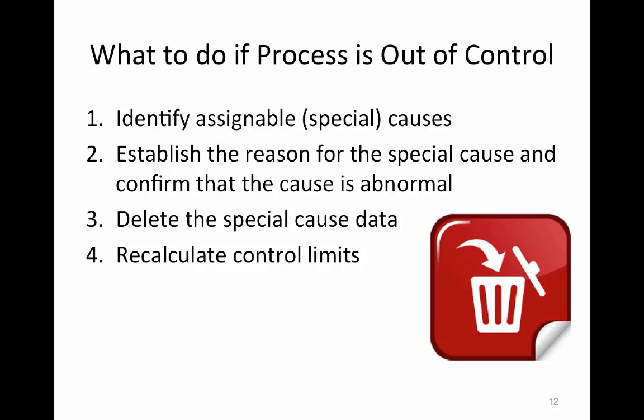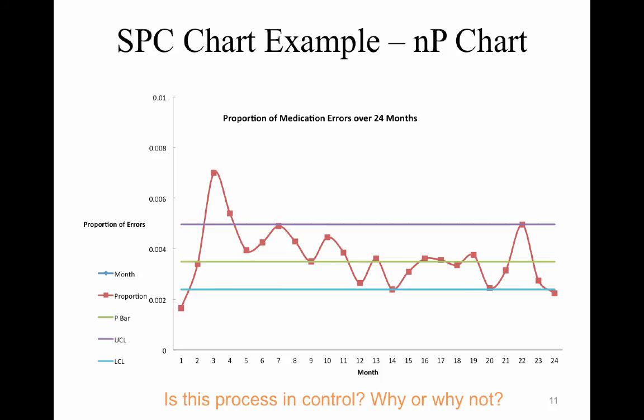So what do you do if the process is out of control? Well, you try to identify and assign a special cause to that dot here. So here, if I had month three, I'd want to identify, well, why was three so high for medication errors? What was unusual about that third month? And so that's what you're trying to do.